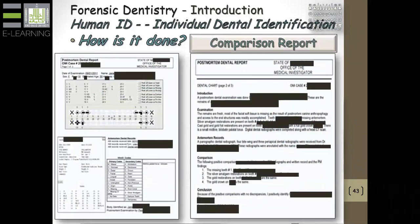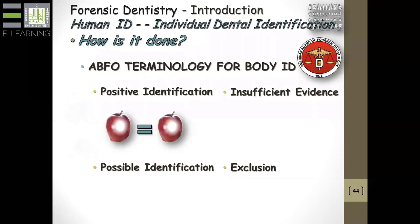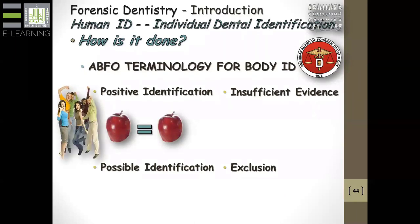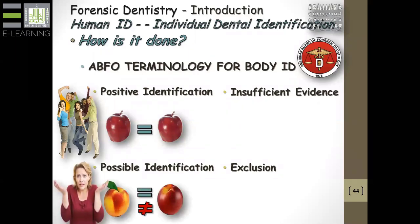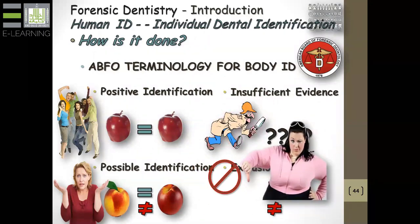I've had to redact out all the names, but this is the kind of chart that would be submitted to the legal authorities indicating that a positive identification has been achieved. Our specialty board has determined specific language that should be used when testifying — whether it's a positive identification, a possible identification, cases with insufficient evidence, or in some cases no match at all — there's exclusion.